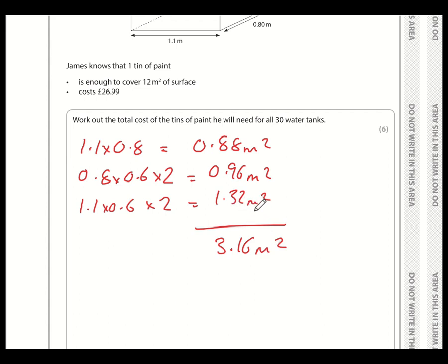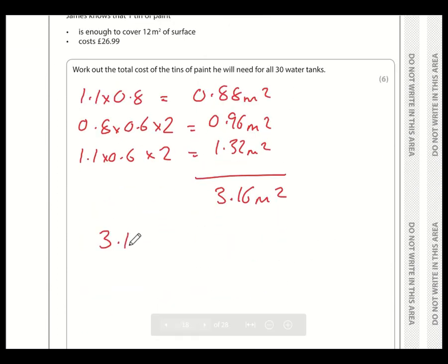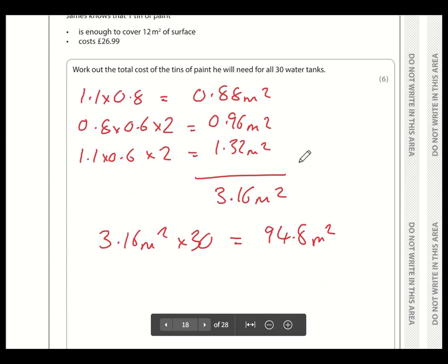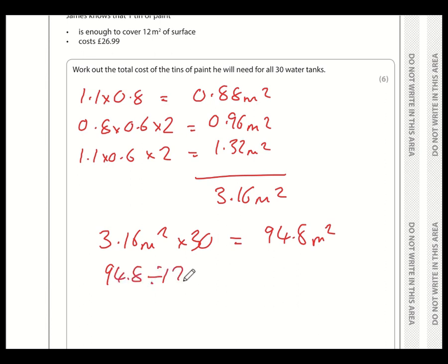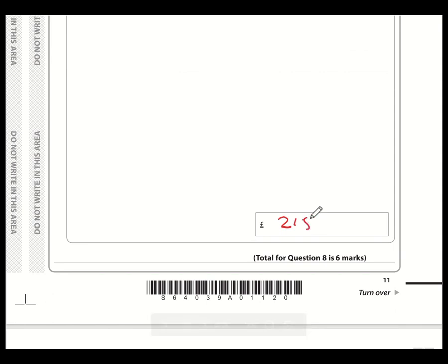Okay, so we know. Ah, however, we need to. I was thinking that's quite a small number, but we need to paint 30 of them. So we need to multiply this number by 30. So 3.16 square meters multiplied by 30 water tanks. That comes to 94.8 square meters. So we need enough paint to cover 94.8 meters squared. And we know that one tin of paint covers 12. So how many 12s go into 94.8? Well, 94.8 divided by 12 is approximately 7.9. And so we're going to have to have 8 tins of paint. So that's 8 lots of 26.99. And 8 times by 26.99 comes to 215 pounds 92. So that is our answer, 215.92.